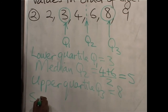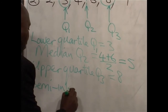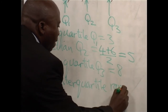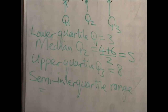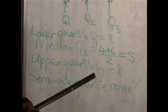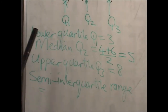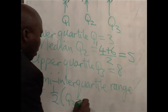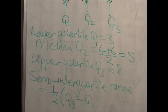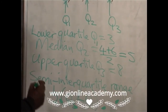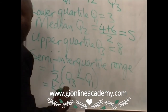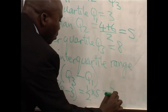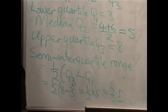How would you find the semi-inter-quartile range? Sometimes they'll ask you to find the semi-inter-quartile range instead of the inter-quartile range itself. The semi-inter-quartile range will be half of Q3 minus Q1. We have Q3 = 8 and Q1 = 3. So this will be half of 8 minus 3, which is half of 5, giving an answer of 2.5. That will be the semi-inter-quartile range.